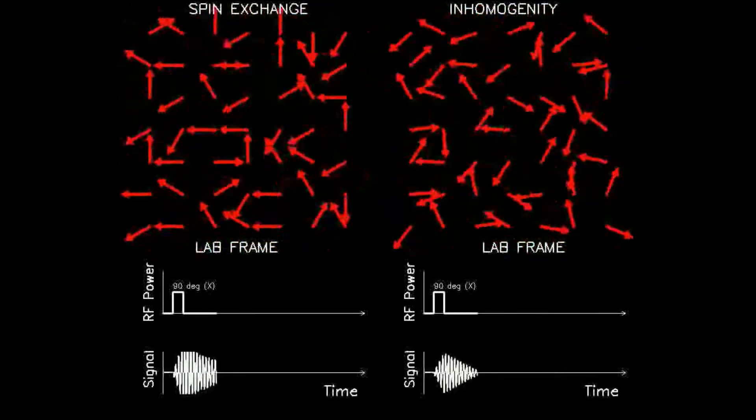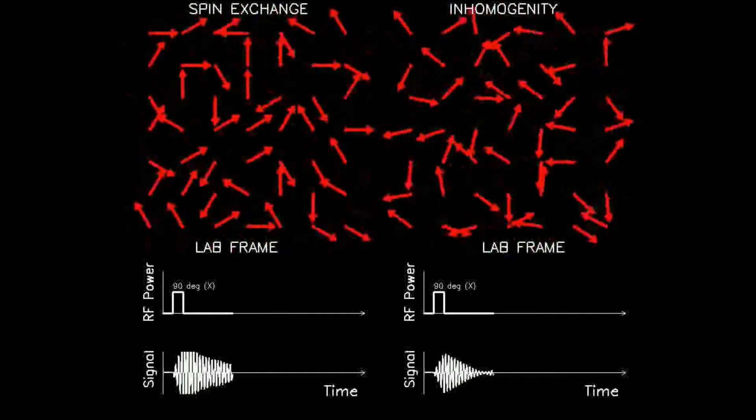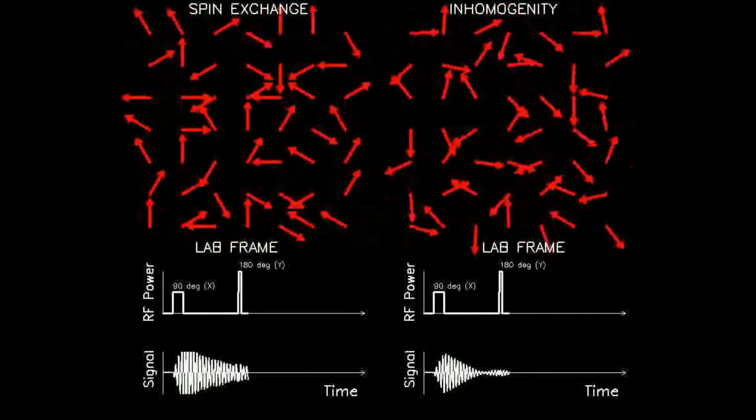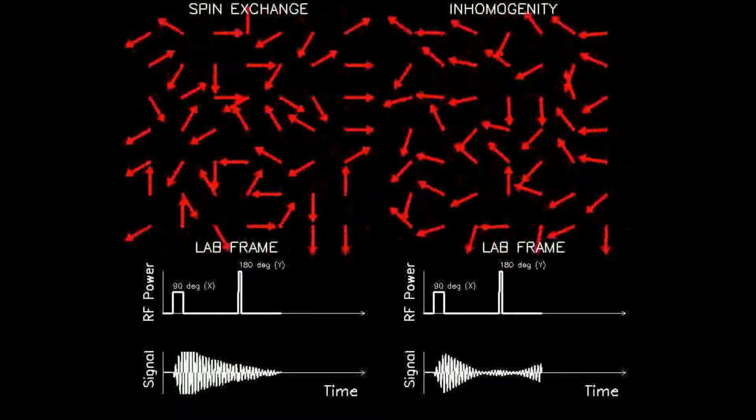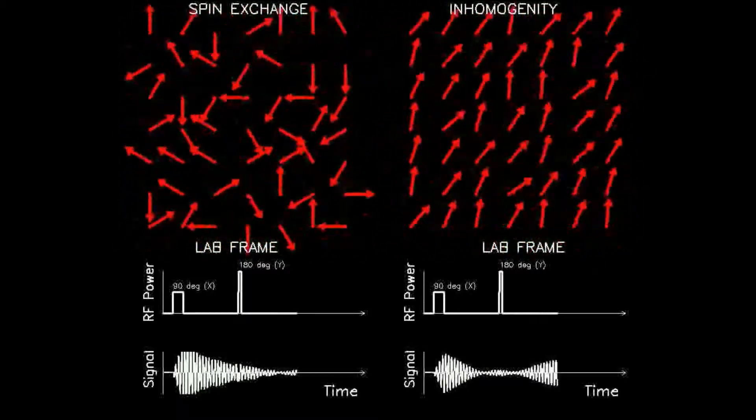A little time after the 180 degree pulse, the spins realign and again process in synchrony, just like they did in the beginning, and a strong signal is detected. After this, the signal again decays as before.